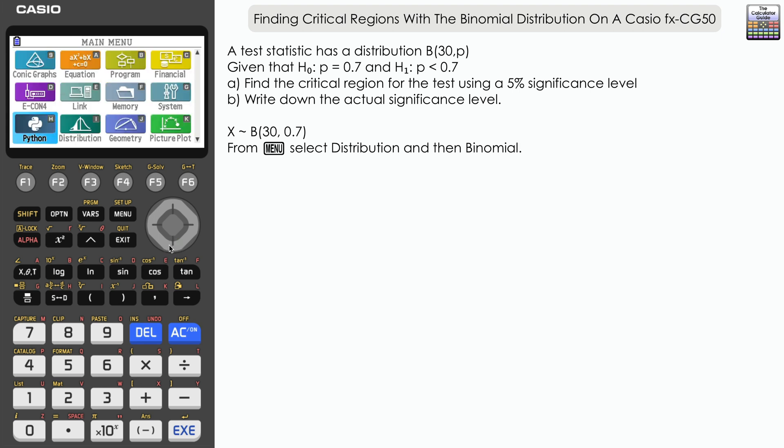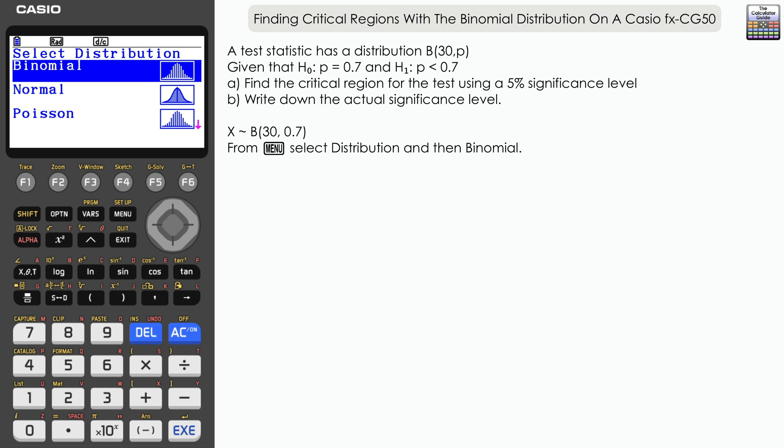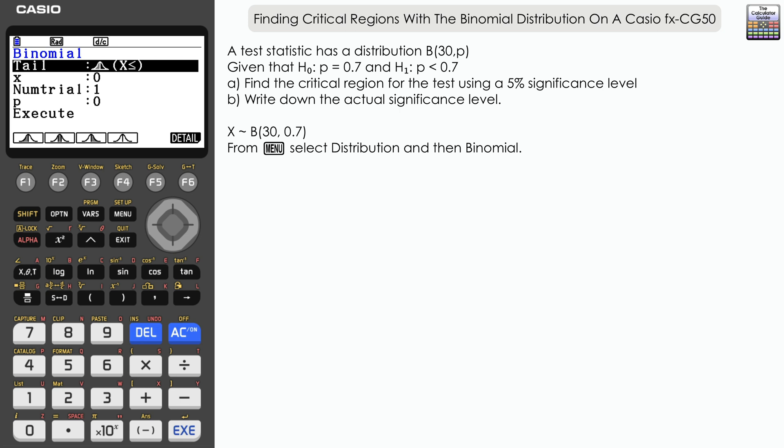From the menu, navigate to the distribution app and then select Binomial. Now I have the default settings here; you may have some stored from any previous calculations. Now we want to focus on the lower tail, which I have set up by default.